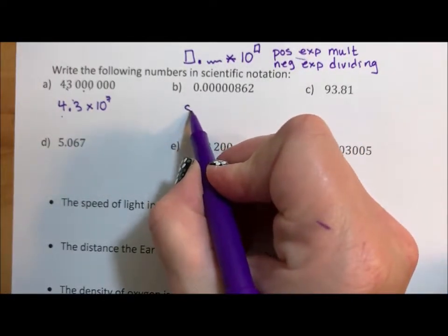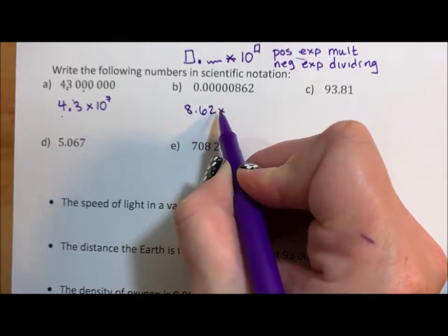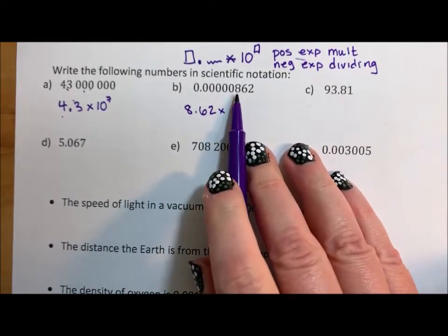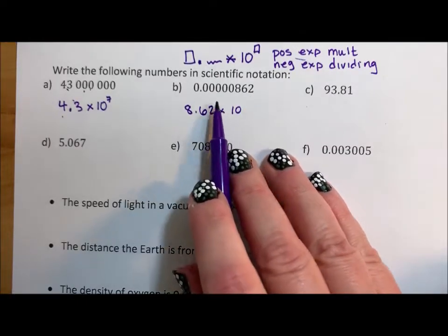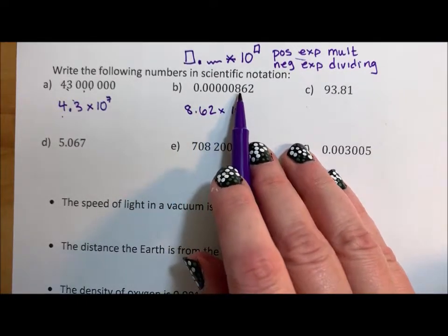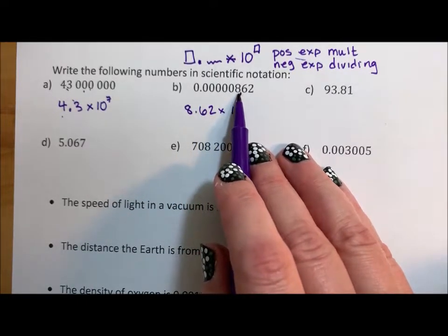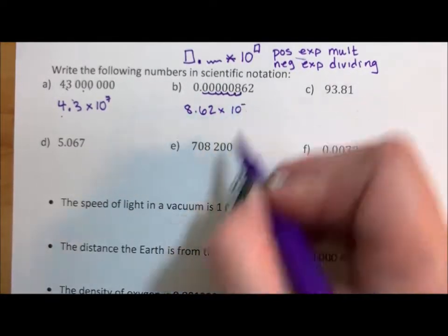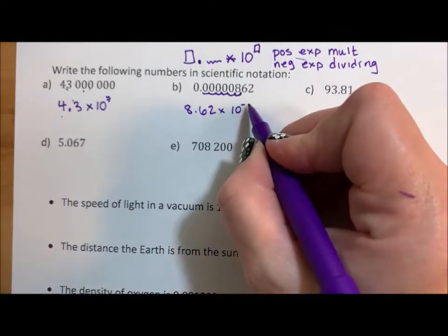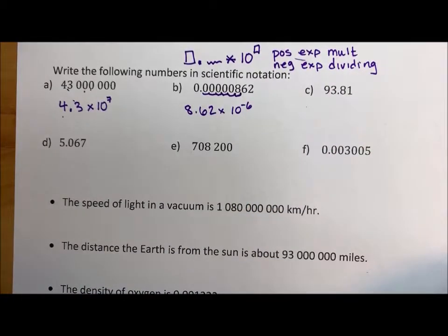For this one, we have 8.62 times 10. Eight is our first non-zero, decimal point, the rest of the numbers, times 10. This time we would divide to get it back. We would divide by 10 once, twice, three, four, five, six times. Negative because we're dividing, 6 because that's how many times we've divided to get it back.